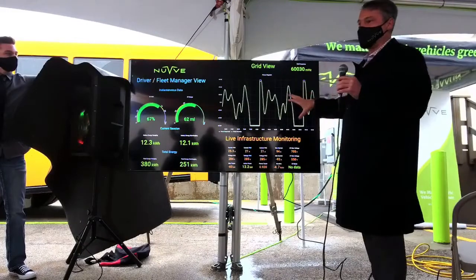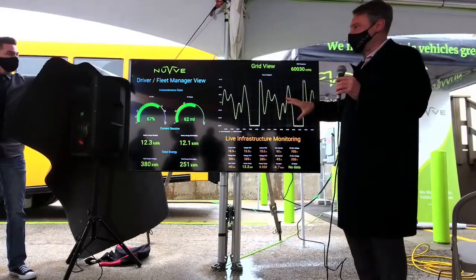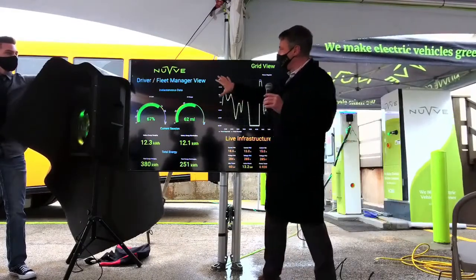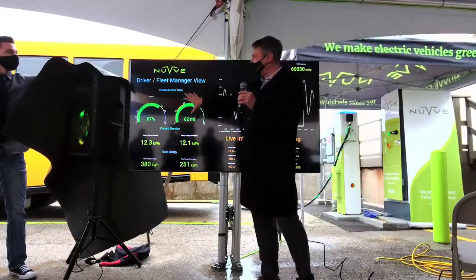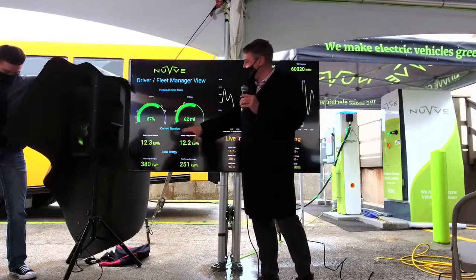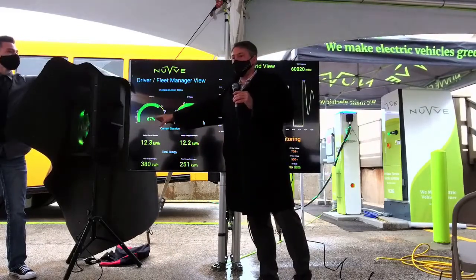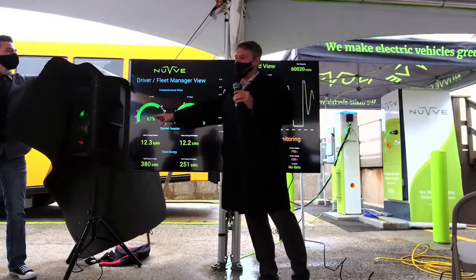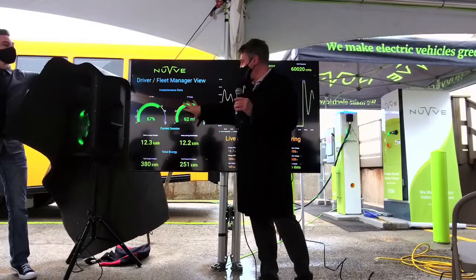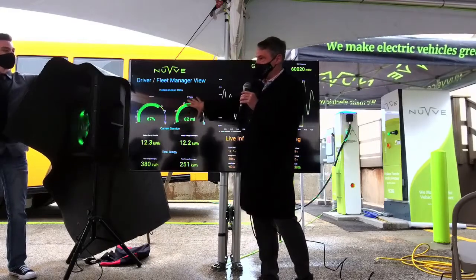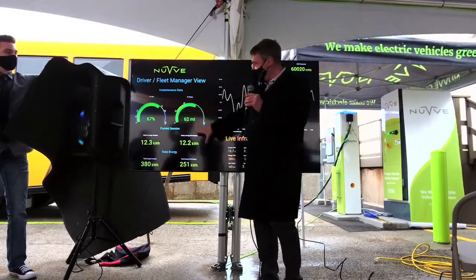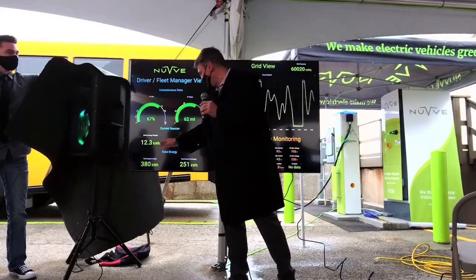You have multiple interfaces that you see here. This is what we call the driver fleet manager view. This tells you the current state of charge — the battery is charged at 67% — and that tells you how many miles you can do with that. Below here is the current station.